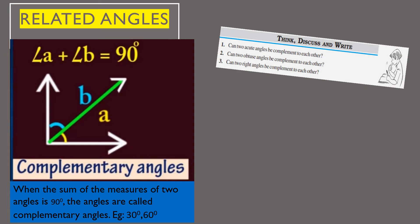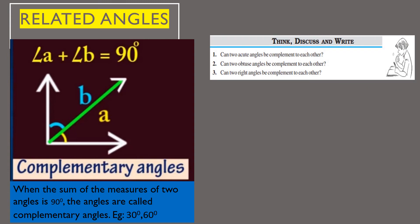Let us think, discuss, and write. Can two acute angles be complementary to each other? Yes, it is possible, because the sum of two angles must be 90 degrees for them to be complementary. Since acute angles are always less than 90 degrees, the sum of two acute angles can equal 90 degrees.